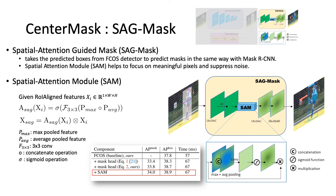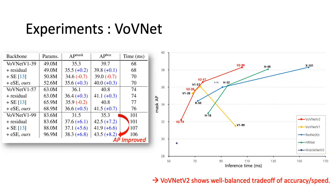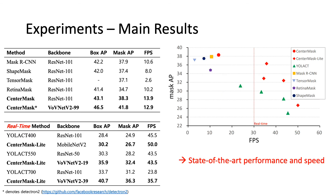The spatial attention module helps the mask branch to focus on meaningful pixels and suppress noise. BobNet V2 shows a better accuracy and speed trade-off than other backbone networks. CenterMask achieves state-of-the-art performance and speed on the COCO dataset.